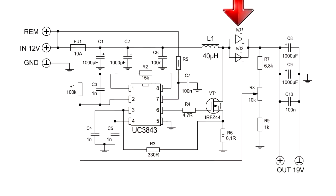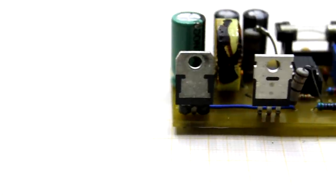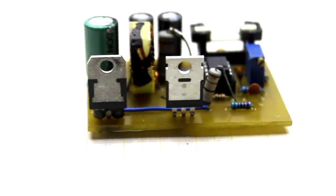The output rectifier is a dual Schottky diode. Can be used any with a current of 10 amperes with a reverse voltage of at least 40 volt.